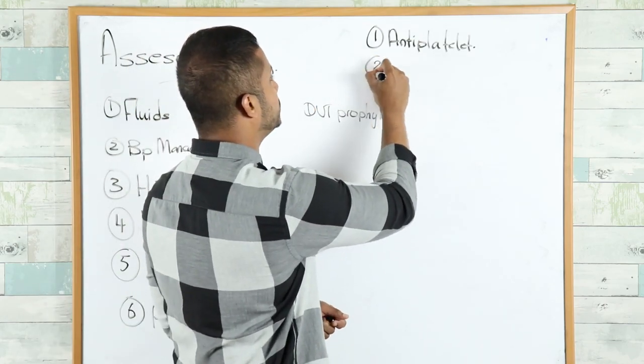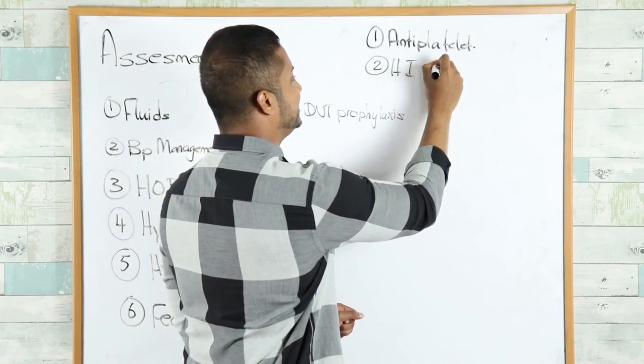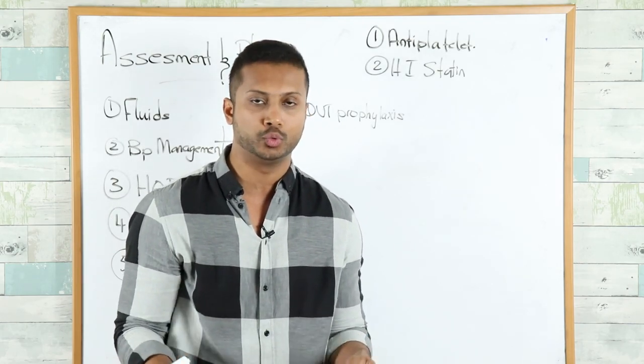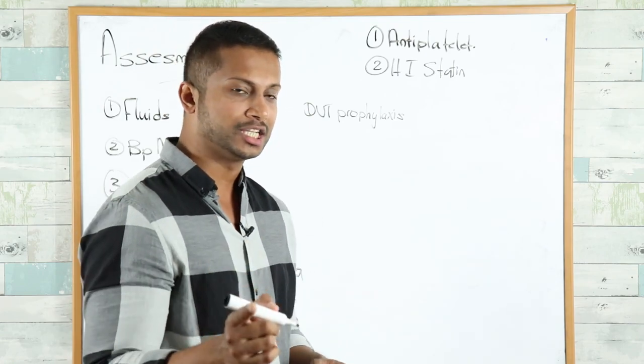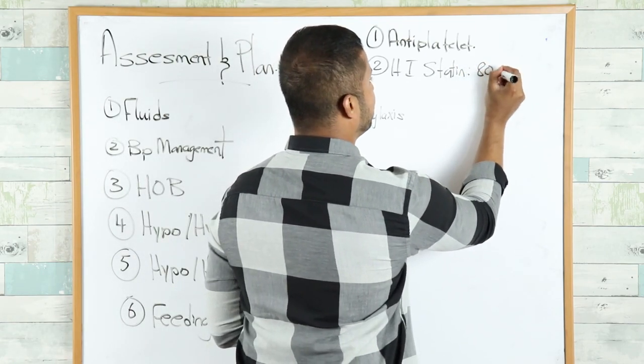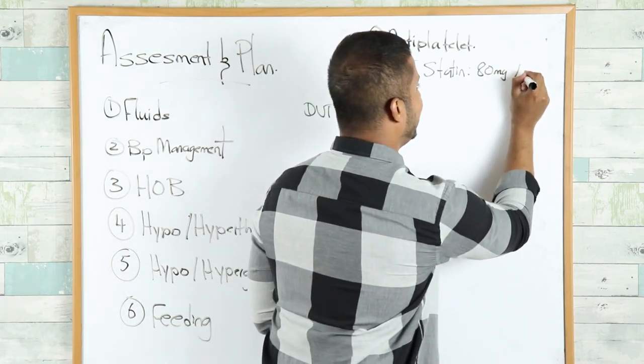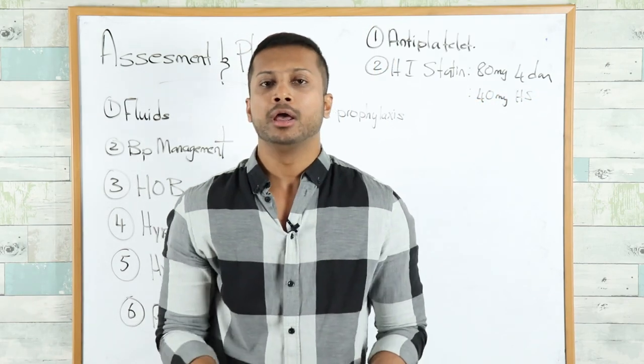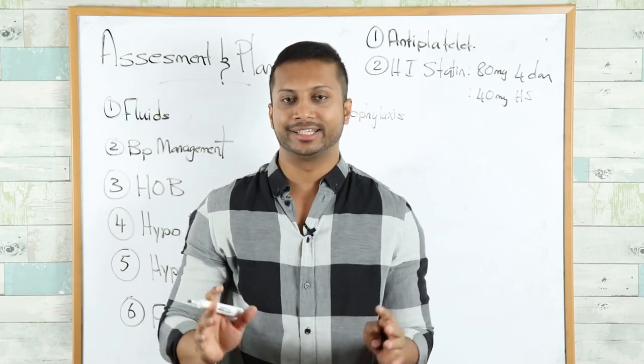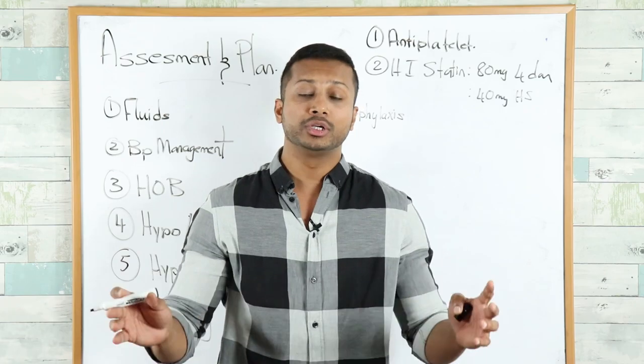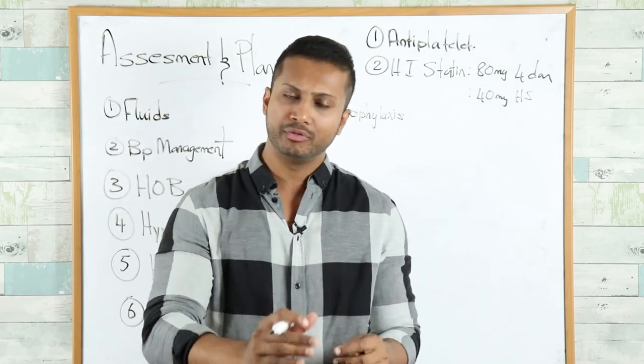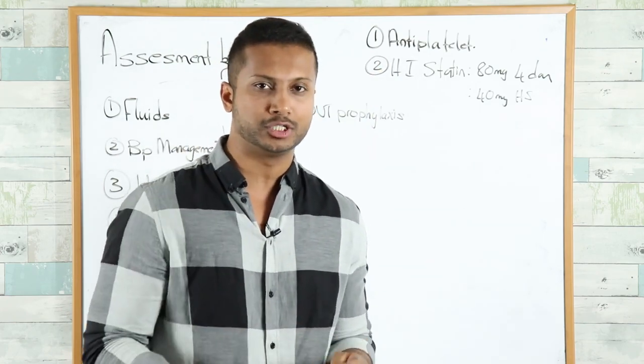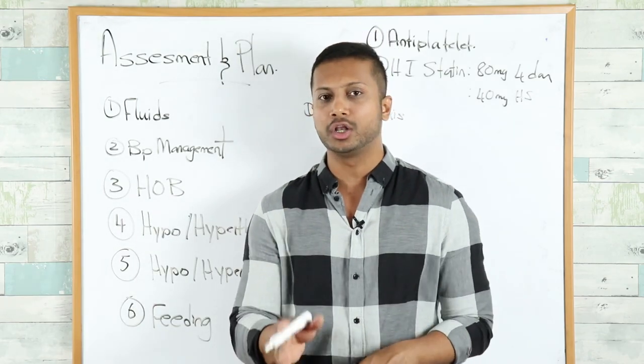Number two: you want to start the patient on a high intensity statin. Recall the two high intensity statins are atorvastatin or rosuvastatin. You can do 80 milligrams of high intensity statin for four days, then after four days bring it down to 40 milligrams at bedtime. Long-term therapy of statin usage follows the ASCVD score, which we'll cover in a different section. For acute management, remember: antiplatelet agent and high intensity statin.